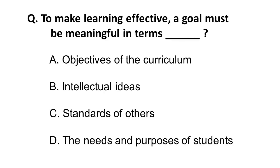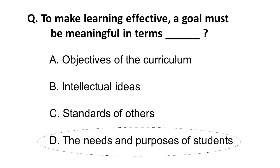The next question is: to make learning effective, a goal must be meaningful in terms of — A) objectives of the curriculum, B) intellectual ideas, C) standards of others, or D) needs and purposes of the students. Standards of others can be eliminated — you cannot make learning effective with that as a goal. Intellectual ideas are more suited for research. If your goal is only the curriculum objective, that is narrow thinking.